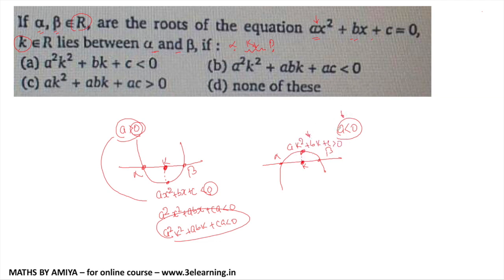a is negative, this one is positive, when we multiply, we will get nothing but a square k square plus a bk plus a c is negative, so answer is nothing but option number b.